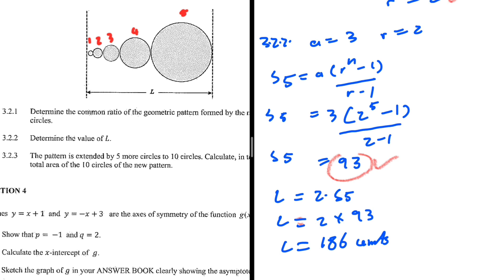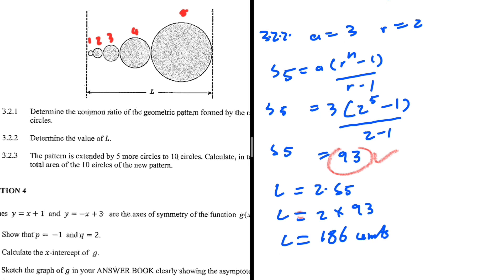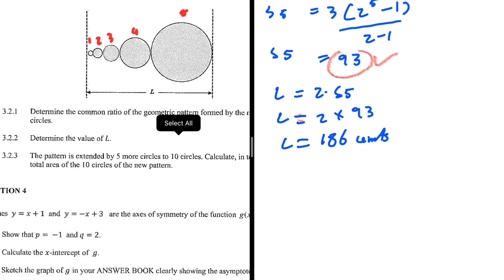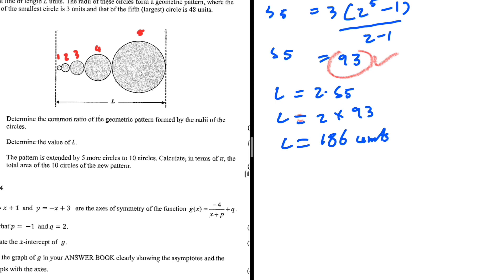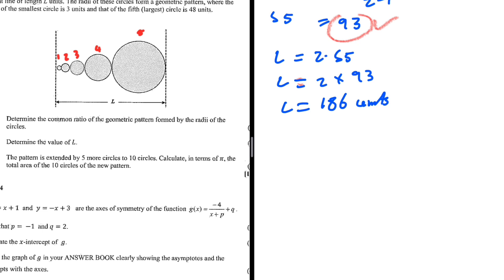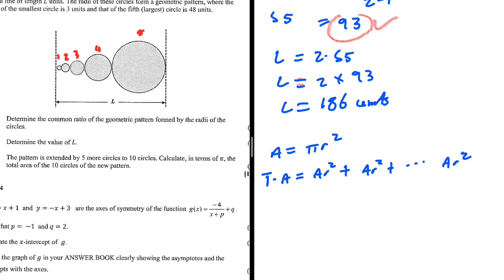Now for 3.2.3: the pattern is extended by five more circles to 10 circles. We need to calculate, in terms of pi, the total area of all 10 circles. The area of a circle is pi·r squared. The total area equals the area of the first circle plus the area of the second circle, up until the area of the 10th circle.